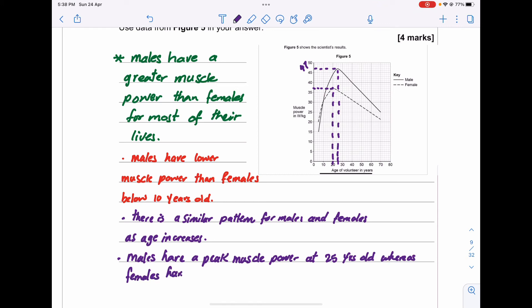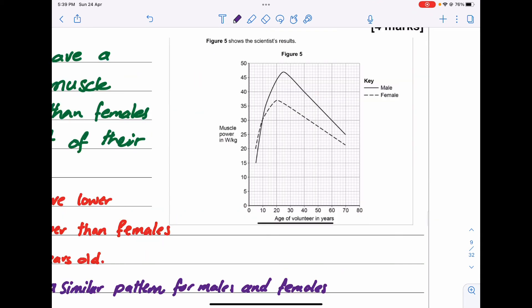The rate of increase of muscle power is greater for males between ages 5 to 25 compared to females. After age 25 for males and 20 for females, the rate of decrease of muscle power is also greater for males than females.